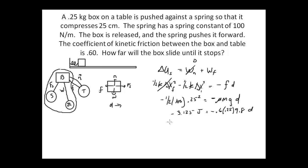And then that's equal to negative 0.6 times 0.25 times 9.8 D. We get rid of the negative signs, so 3.125 is equal to 1.47 D.